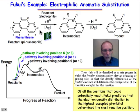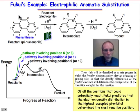Specifically, we'd like to understand why a substrate such as phenanthrene undergoes electrophilic aromatic substitution with the hydrogen atom on position 9 being replaced by the electrophile.